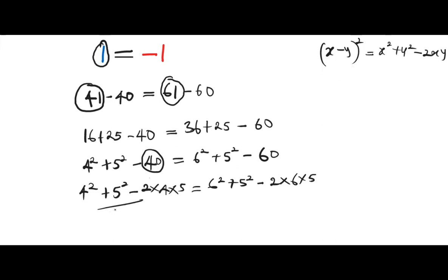So if we go with this identity, you're gonna have 4 squared plus 5 squared minus 2 times 4 times 5 is the same thing as writing 4 minus 5 raised to the power of 2. And this equals to 6 squared plus 5 squared minus 2 times 6 times 5, which is the same as writing 6 minus 5 raised to the power of 2. So 4 minus 5 raised to the power of 2 equals to 6 minus 5 raised to the power of 2.